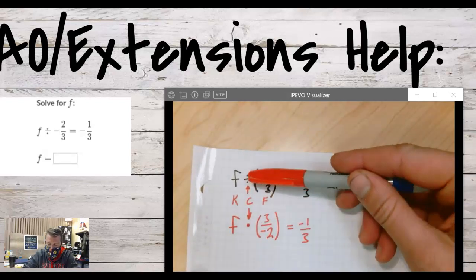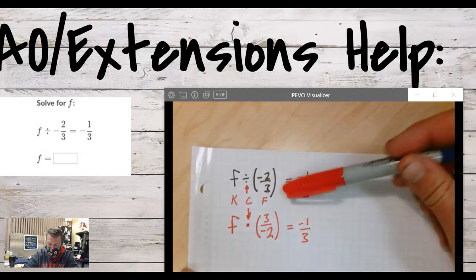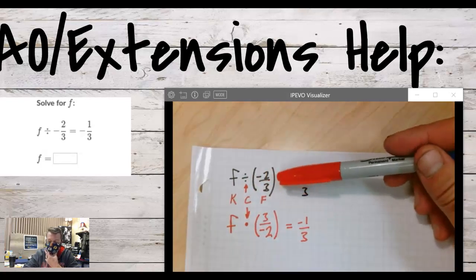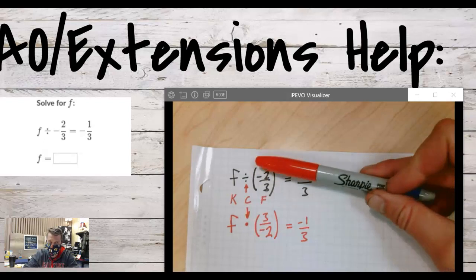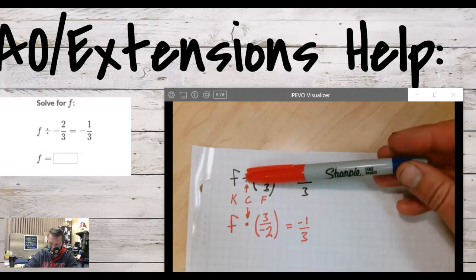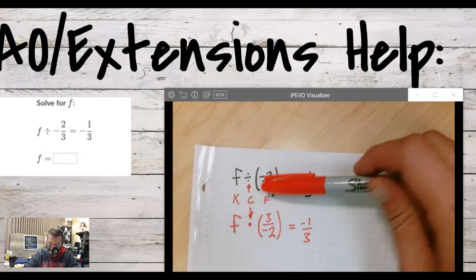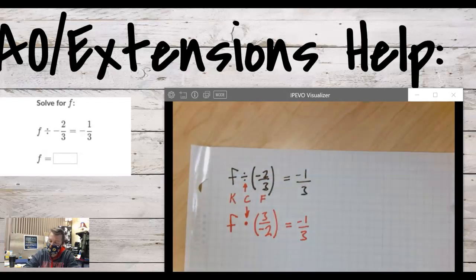Division is complicated, but we know it's just the inverse or reciprocal operation in a way to multiplication. So we use this process called keep, change, flip.